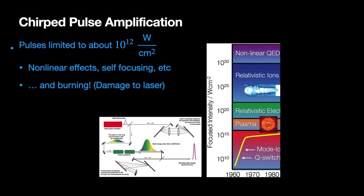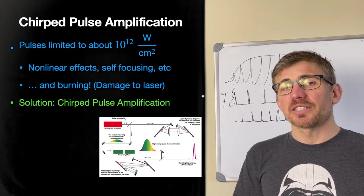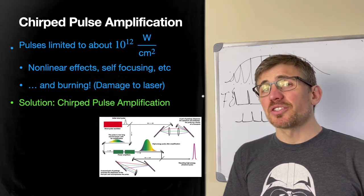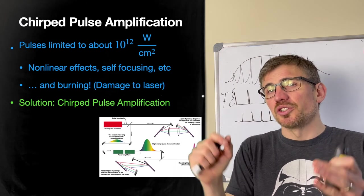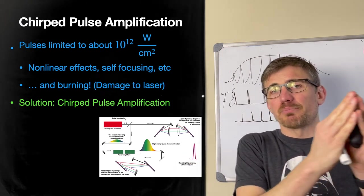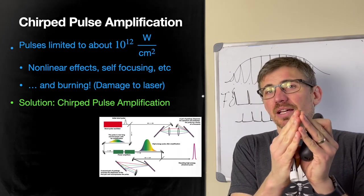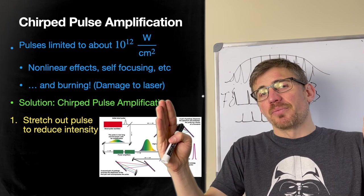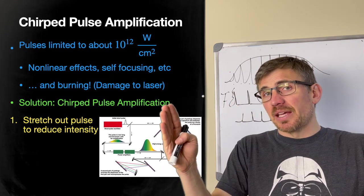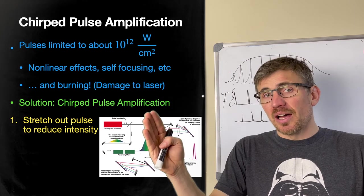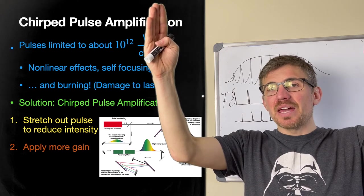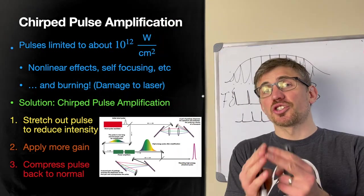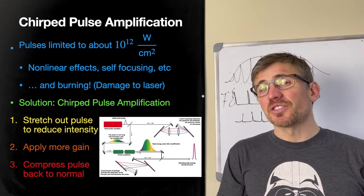And that was done in the mid 80s by Moreau and Strickland. And so let's think about how that works. That's chirp pulse amplification. Basically, there's three components to it. We need to get ahead of the, we need to get around this damage threshold where the intensity is locally too high. So the trick is we have our pulse, it's as short as we can get it with a relatively high amplitude. And then we're going to stretch it out over time. We're going to stretch it out. So the power is the same, the energy is the same in that pulse, but it's stretched out in time. So the intensity goes down. And then we're going to apply more gain, gain it up even more. And then outside of the gain medium, compress it. And that's chirped pulse amplification. So let's go through those three steps.